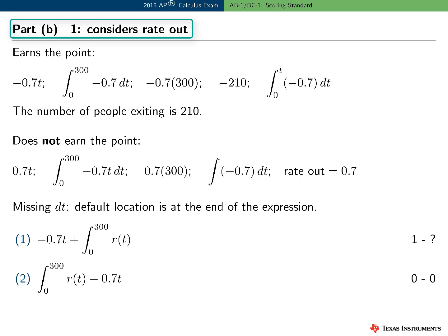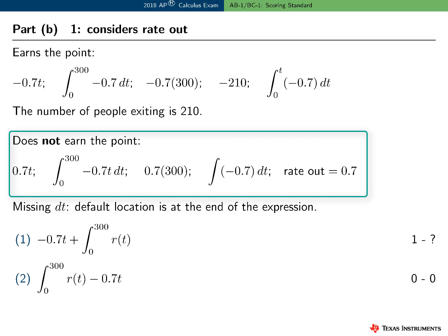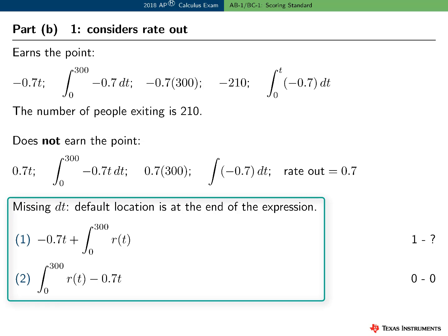In Part B, the first point was for considering the rate out in a meaningful way related to the question. Several examples show students conveying sufficiently that they are considering the rate out — they can even earn this point by expressing the idea in a sentence or phrase. Some examples do not earn this point because the student has not considered the rate out correctly or sufficiently. Again, a missing differential dt was interpreted as if dt appeared at the end of the expression. In the first example the student correctly considers the rate out; in the second, placing dt at the end results in an incorrect consideration, so the student does not earn the point.